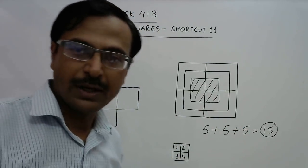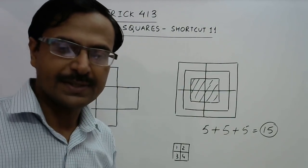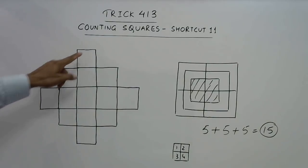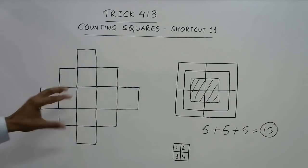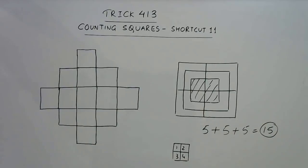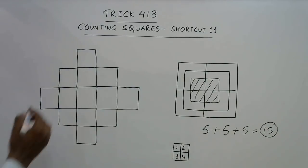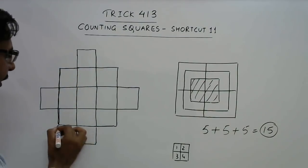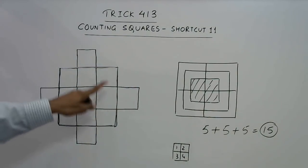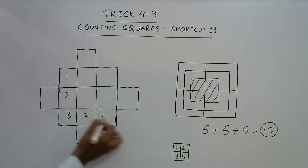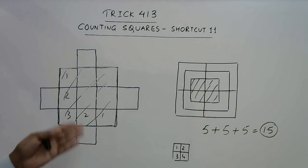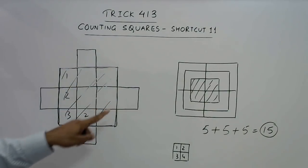Here we have one more figure with a number of smaller squares. If you just count 1, 2, 3, 4, 5, 6 like this, you are bound to miss some squares, so you need to be aware of the shortcut. See the square I am darkening right now — this is actually a 3 by 3 matrix: 1, 2, 3 along one side and 1, 2, 3 along the other. If you consider only this shaded portion, you need to know the shortcut for finding the number of squares in this 3 by 3 matrix.